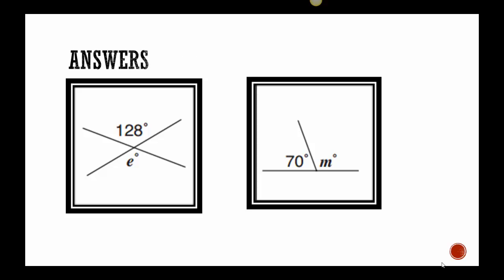So let's start with the E. Once again, you need to recognize that this is a vertical angle. So this tells me immediately that E is equal to 128 degrees. With M, I can see these two form a line. So this tells me they are supplementary, and the sum of 70 and M would be 180. So 70 plus M is 180, so I need to subtract 70 from both sides. So here I have 180 minus 70, which tells me M is 110 degrees.